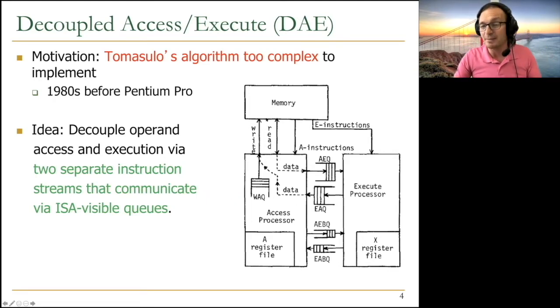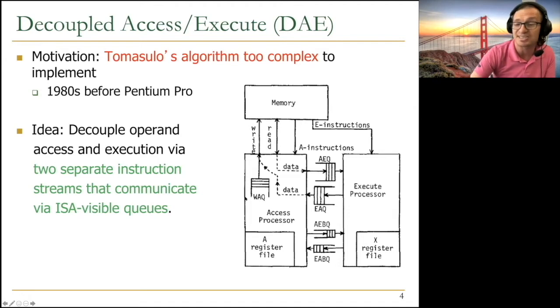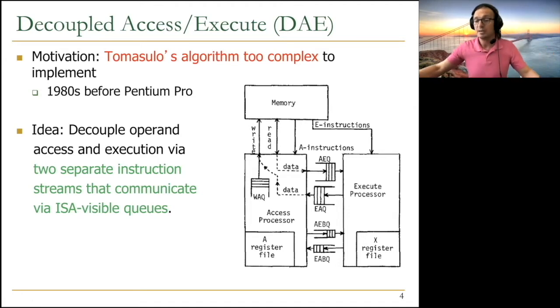Memory accesses may be bottlenecked by memory, but computation may not be bottleneck, so you keep doing computation while you're waiting for memory. It may be the other way around also. Sometimes you may be waiting for long computations but you may be continuing memory accesses. So this way, without having the full-blown out-of-order execution, you don't need to stall between the access and execute processors. While the memory operation is going, you can do a computation and vice versa. That's the beauty of it.